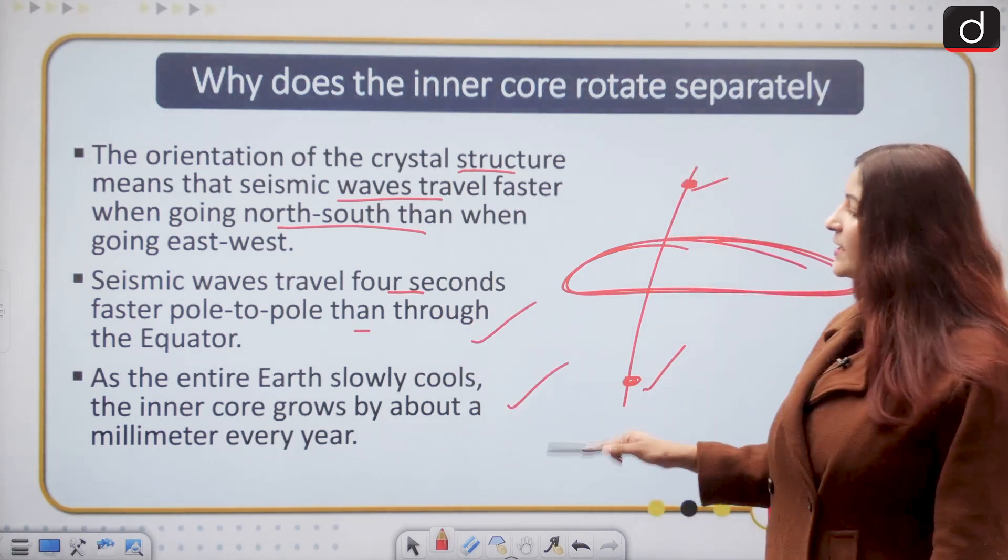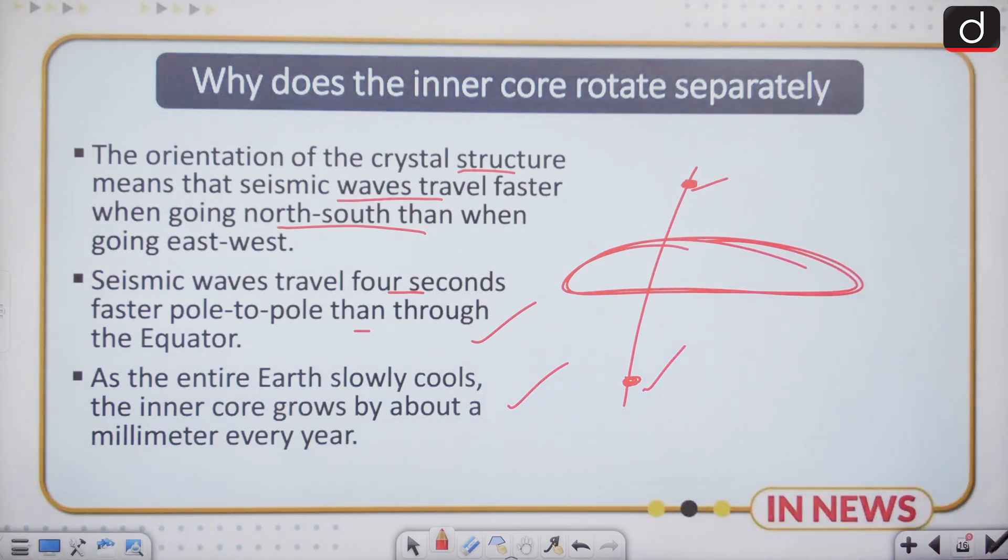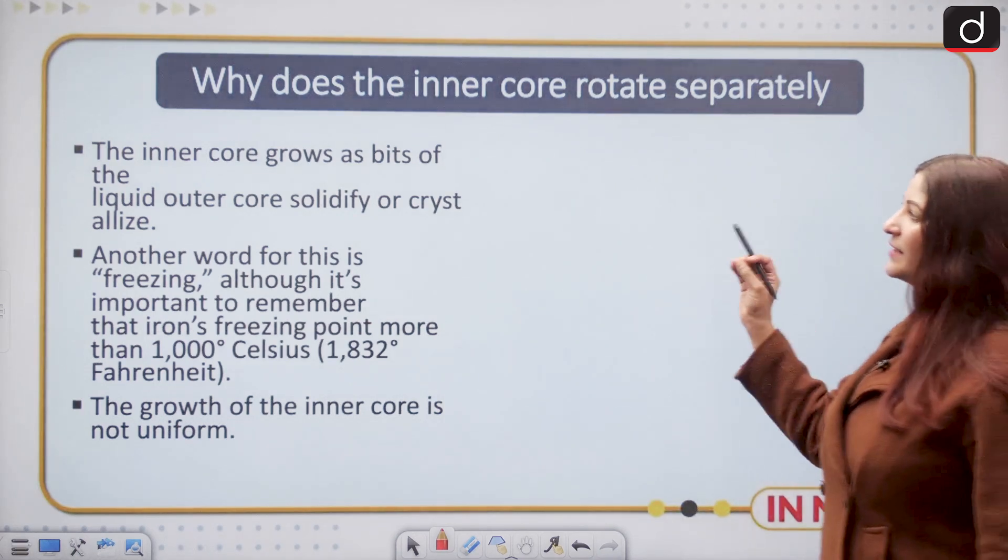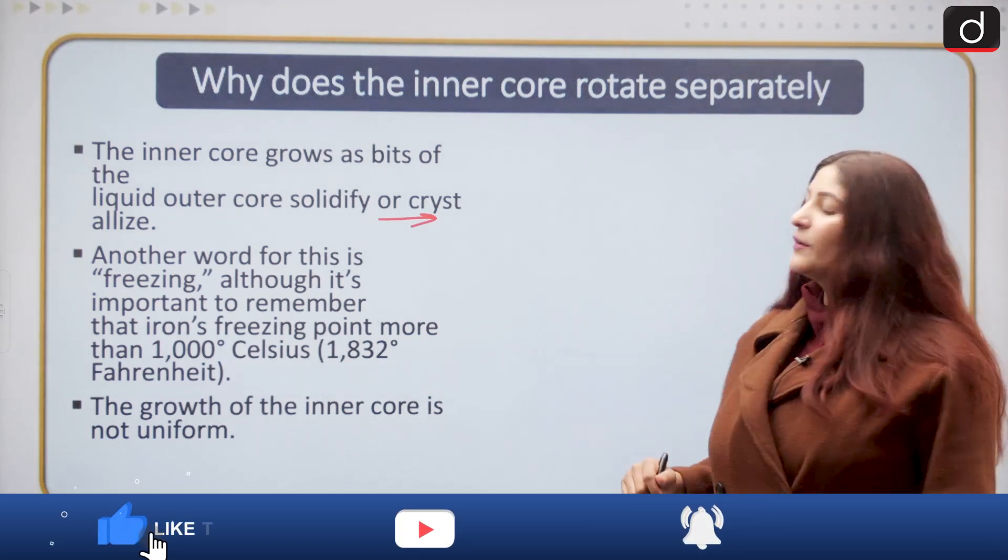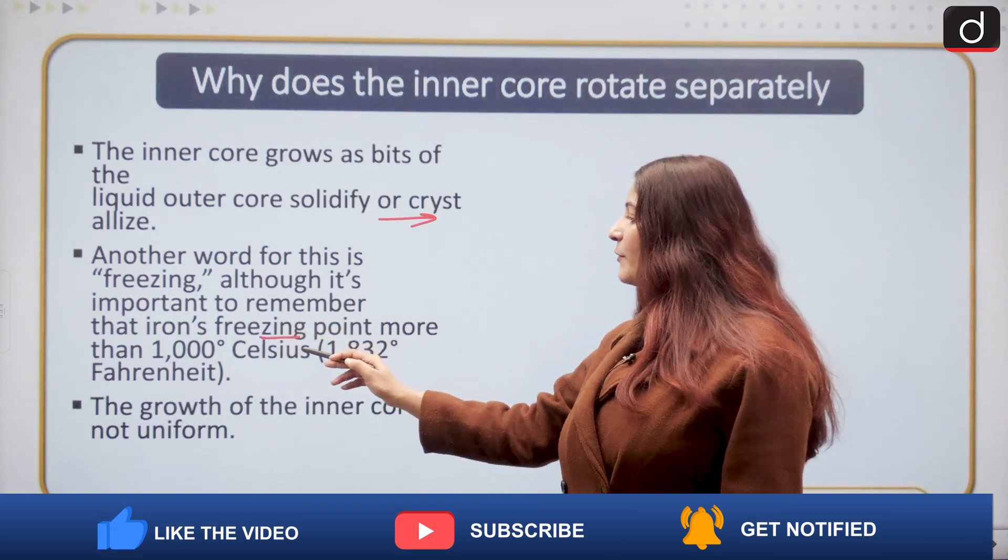Seismic waves travel four seconds faster pole-to-pole than through the equator. As the entire earth slowly cools, the inner core grows by about a millimeter per year. The inner core grows as bits of the liquid outer core solidify or crystallize, another word for this is freezing, although iron's freezing point is more than 1000 degrees Celsius.